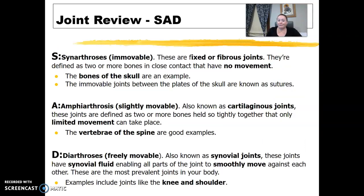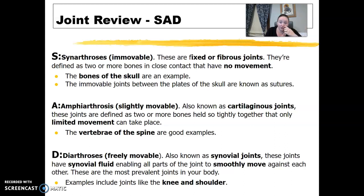Just a terminology review for joints. I was taught to remember it as SAD — Synarthrosis, Amphiarthrosis, and Diarthrosis. The synarthrosis joints are the immovable ones — fixed or fibrous joints with no movement. The bones of your skull would be an example. Amphiarthrosis is your slightly movable — these are your cartilaginous joints, like the vertebrae of your spine. And then the diarthrodial, the freely movable, are the ones we are focusing on for this arthrogram discussion, and those are your synovial joints.